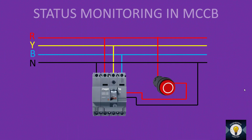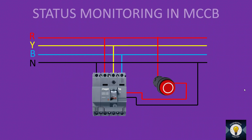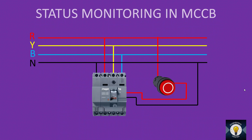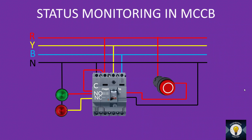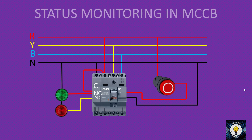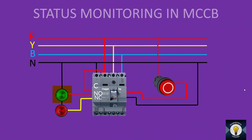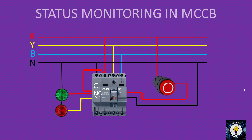To monitor the status of MCCB when the panel is at a remote location, auxiliary contact blocks are used. Some MCCBs come with them inbuilt; others require inserting an auxiliary contact block. Connect two lamps — green and red — with neutral looped to both lamps and a single phase to the common terminal of the auxiliary contact block. The NO (normally open) terminal connects to the green light and the NC (normally closed) connects to the red light. In normal ON condition, the green light is lit. When the emergency push button trips the breaker, the contact switches to NC and the red light is lit.